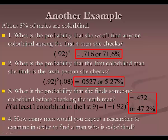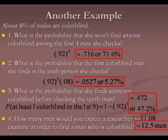Question 4: how many men would you expect the researcher to examine in order to find someone colorblind? One divided by p, where p is 0.08 since finding the colorblind person is the successful event. One divided by 0.08 is 12.5 men — don't cut a man in half, so we round to 13. About one out of every 13 men is colorblind.